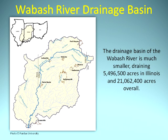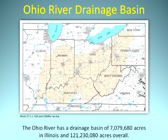The drainage basin of the Wabash River is much smaller, draining 5,496,500 acres in Illinois and 21,062,400 acres overall. The Ohio River has a drainage basin of 7,079,680 acres in Illinois and 121,230,080 acres overall.